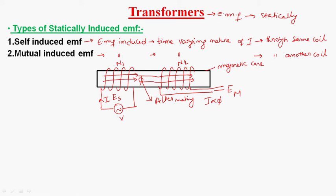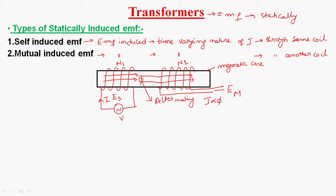To summarize: EMF induced in a coil due to the time-varying nature of current flowing through the same coil is self-induced EMF. And EMF induced in a coil due to the time-varying nature of current flowing through another coil is called mutually induced EMF.